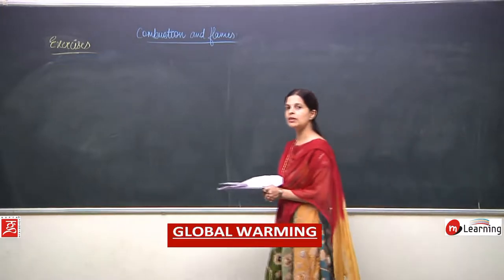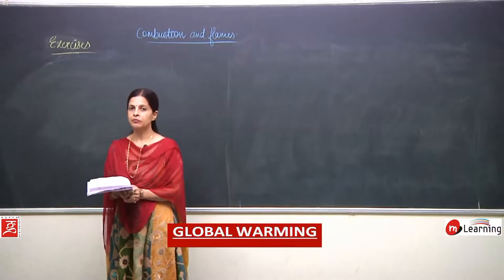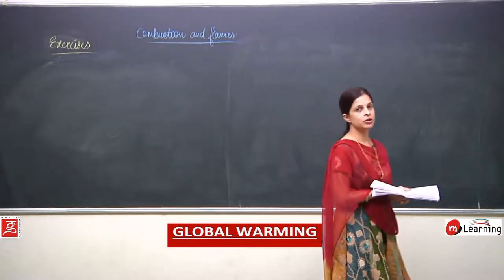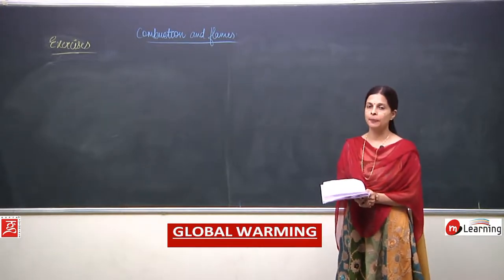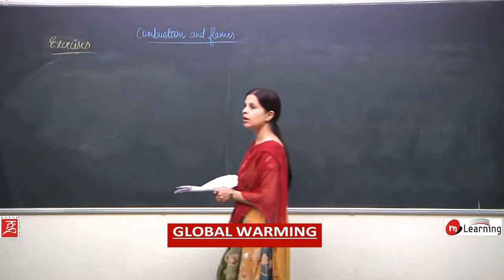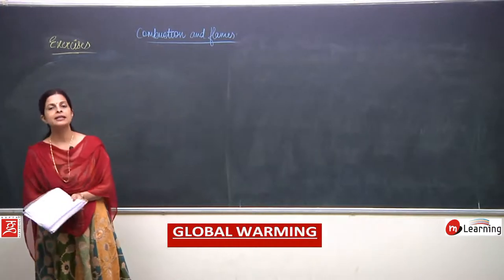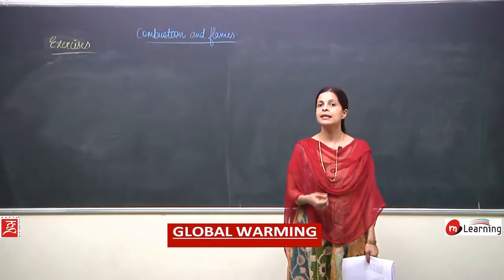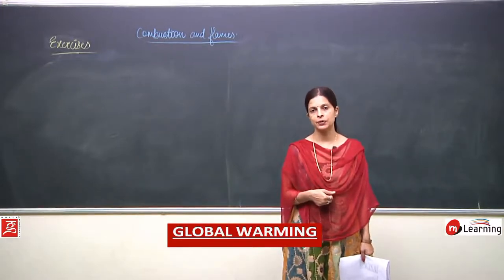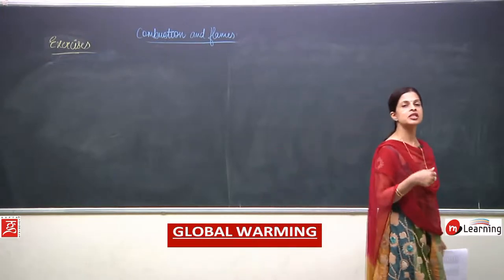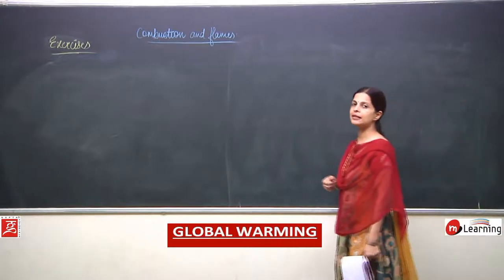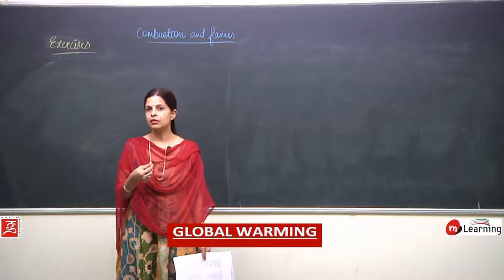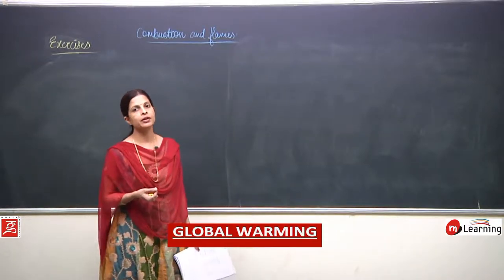Next keyword: global warming. When fossil fuels are used to a great extent, they pollute the atmosphere by forming oxides and releasing gases like carbon dioxide and methane. These gases trap the sun's heat and do not allow it to release back into the atmosphere. When the sun's heat is trapped on the surface of the earth, it increases the earth's temperature, which is known as global warming. Even an increase of a few degrees can be disastrous, so we must be very alert and careful.